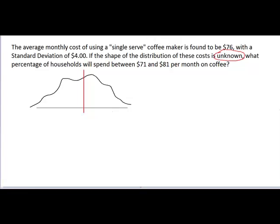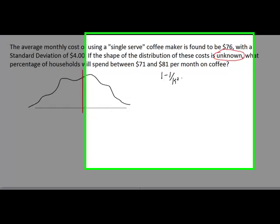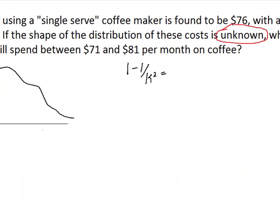What we know that Chebyshev's theorem tells us is that 1 minus 1 over K squared will give us the percentage of data that falls K standard deviations from the mean as long as K is greater than 1. Remember that K equals the number of standard deviations from the mean that this unknown percentage of data will fall.